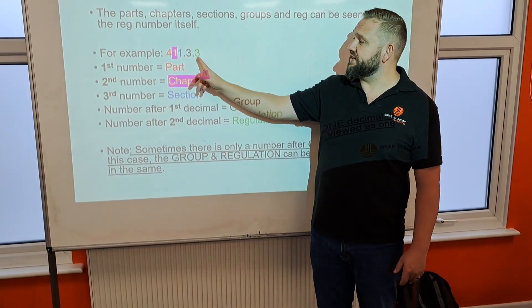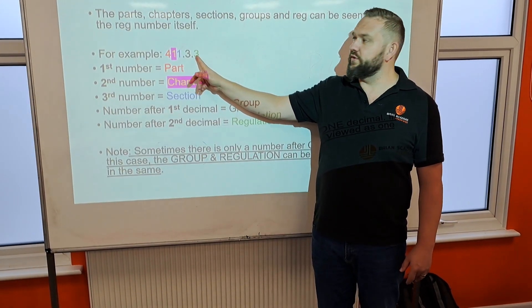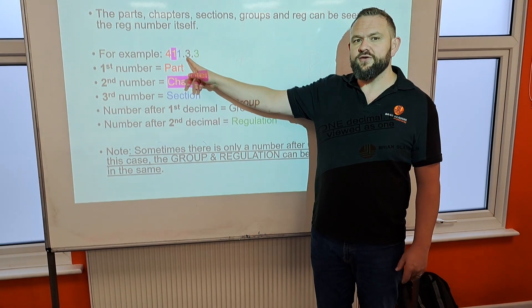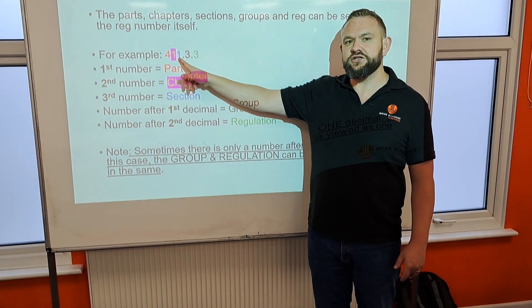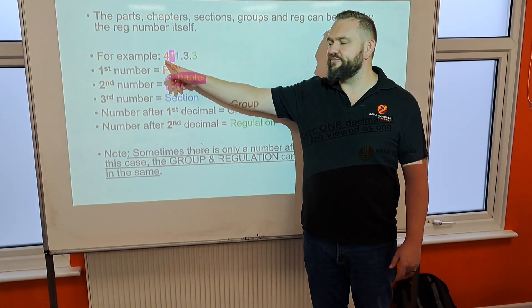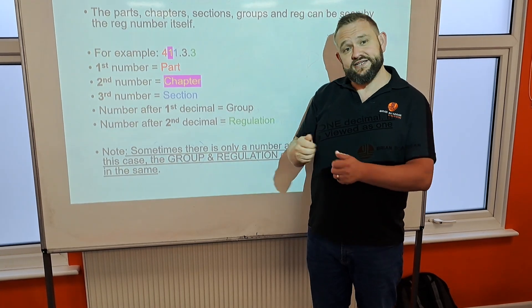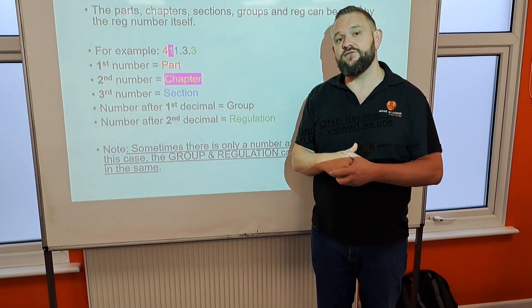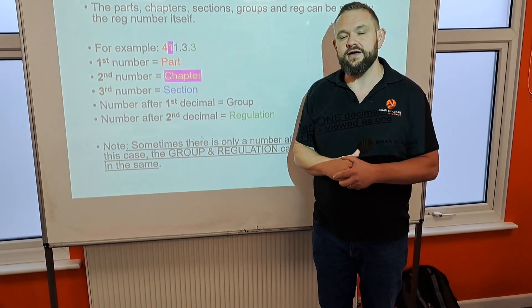And if we were to read it backwards, what that would say was that this was the third regulation within the third group of regulations, in the first section within the first chapter of part four in the regulations. And that's how you would find the regulations, simply by looking at the numbers.